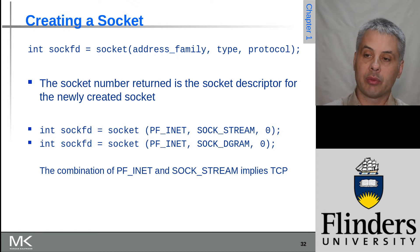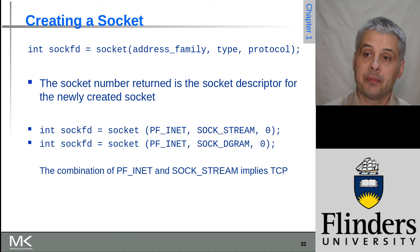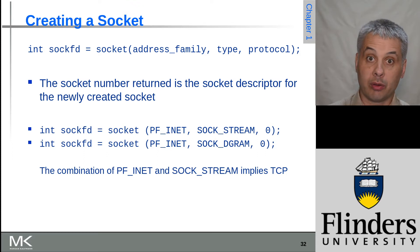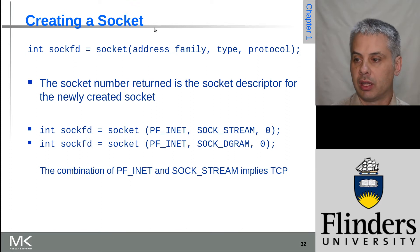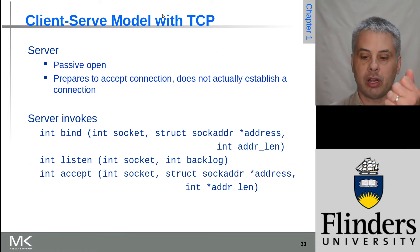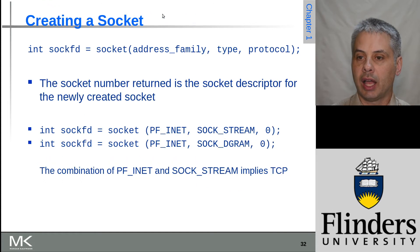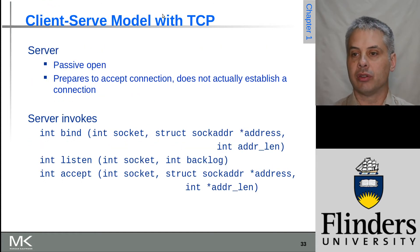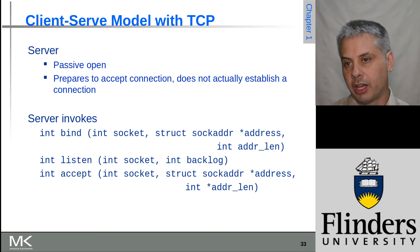In either case, assuming the call succeeds, the result will be a socket number — literally an integer, usually from zero upwards, that can then be used in other calls in the socket API. At this point you have a socket but it's not plugged into anything, so you then need to choose: do you want the socket to listen for incoming connections, or do you want to connect to something else?